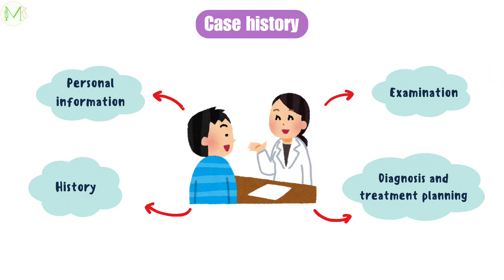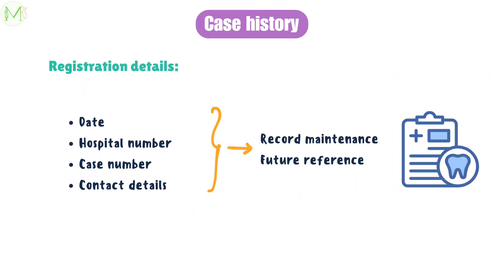There are mainly four categories under the case history recording procedure: collecting personal information through questioning the patient, recording history, examining the patient both extra-orally and intra-orally, and finally arriving at the diagnosis and treatment planning. Before commencing, all registration details such as date, hospital number, case number, and patient's contact details are obtained, as this is an absolute necessity to maintain records and easily identify the patient.